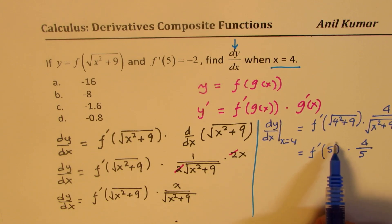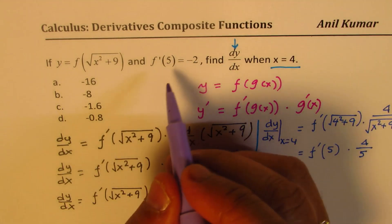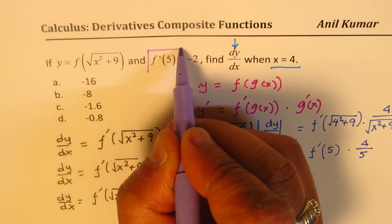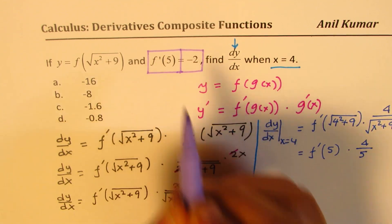Now, what is the derivative? This is given to us. That derivative of the function at 5 is basically equal to minus 2.